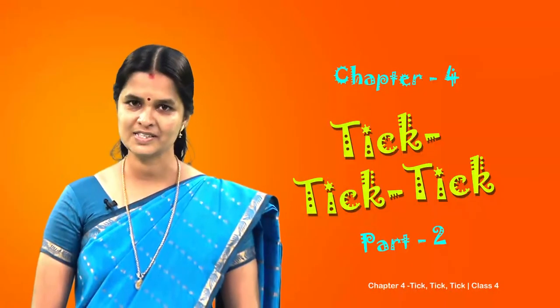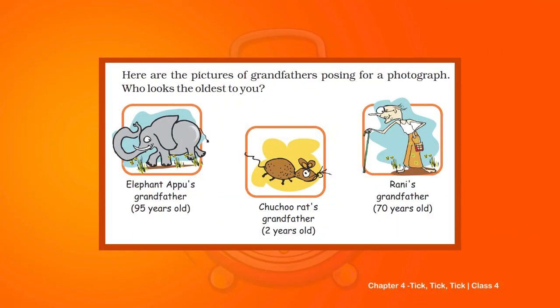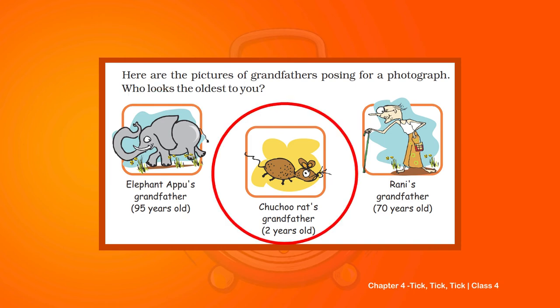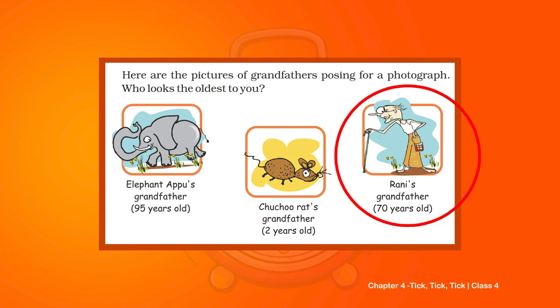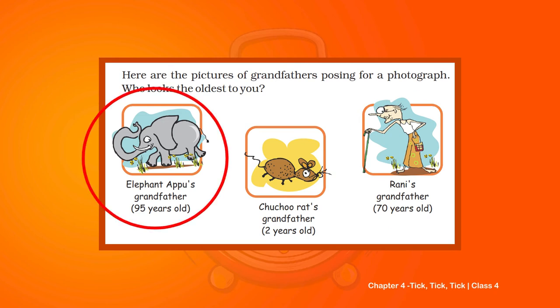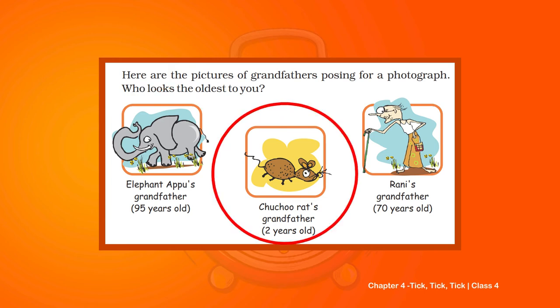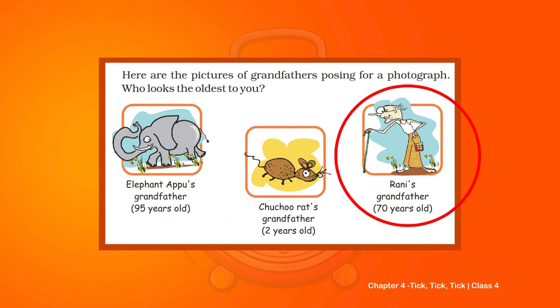Now look at this photograph. Three grandpas are posing for a photo - Appu Elephant's grandpa, Chuchu Rat's grandpa, and Rani's grandpa. Who looks oldest to you? Of course, Rani's grandpa. But look at their ages: Elephant Appu's grandpa is 95 years old, Chuchu Rat's grandpa is 2 years old, and Rani's grandpa is 70 years old.